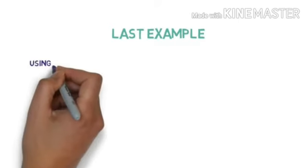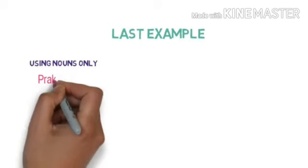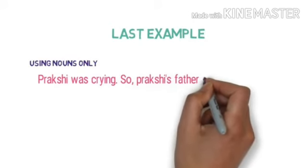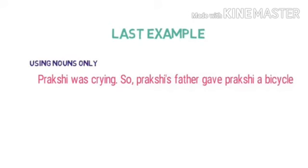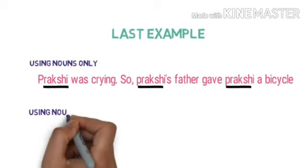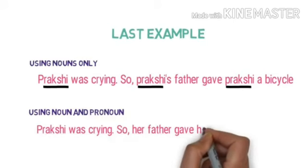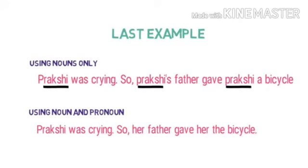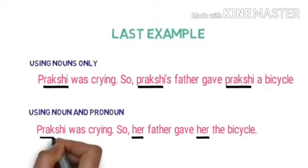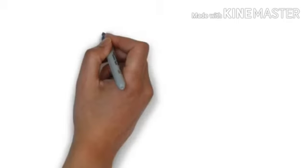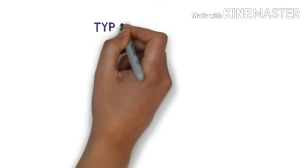Last example. Prakshi was crying. So, Prakshi's father gave Prakshi a bicycle. Next sentence. Prakshi was crying. So, her father gave her the bicycle. Here we used her instead of saying Prakshi name again and again. Now, you can see how the sentence has become easy. And I hope that you understand.